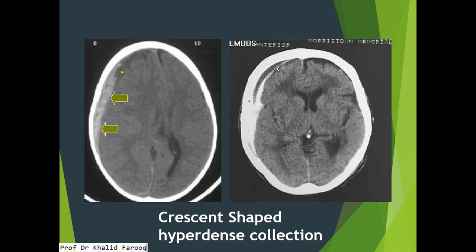Here we see a crescent-shaped or semilunar hyperdense collection over the right parietal lobe — this is the typical presentation of subdural hematoma. A low density area is also associated with this high density area, which is suggestive of a combination of recent and remote subdural hematoma.